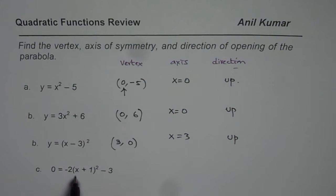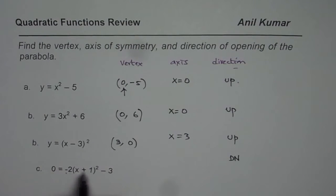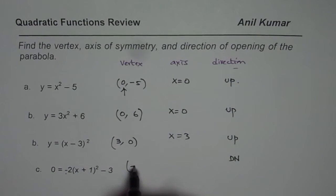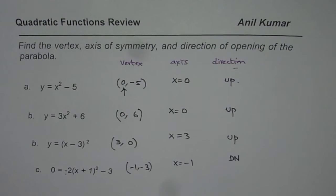In this particular case, the coefficient is negative, which means the parabola opens down. The vertex will be at (-1, -3), and the axis of symmetry is x equals -1.